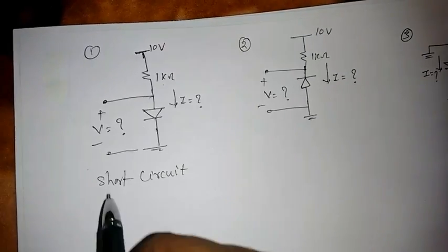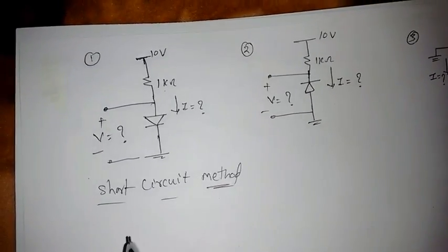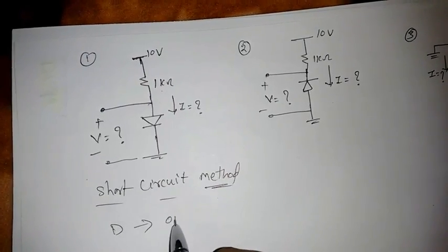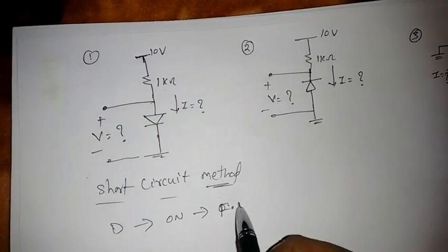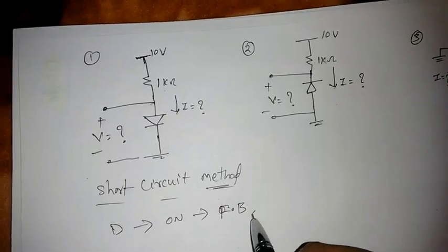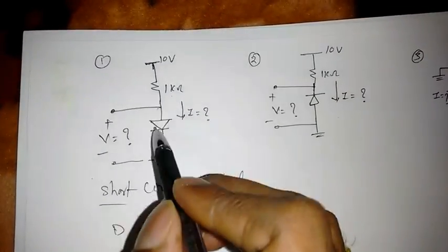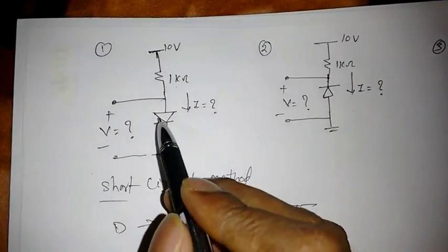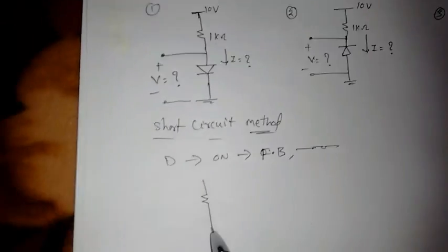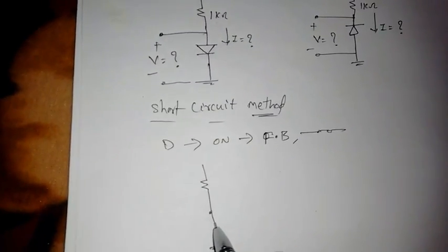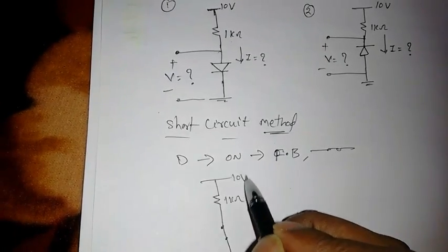In the short circuit method, the first assumption is: assume that the diode is on, or forward biased. That means it will behave as a short circuit. Suppose this is short circuit, so the circuit will behave like this — simply a short circuit with 1 kilo ohm and 10 volts.